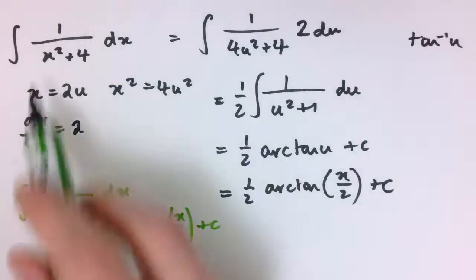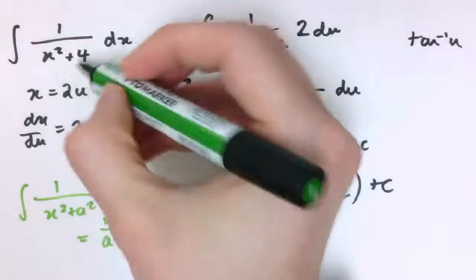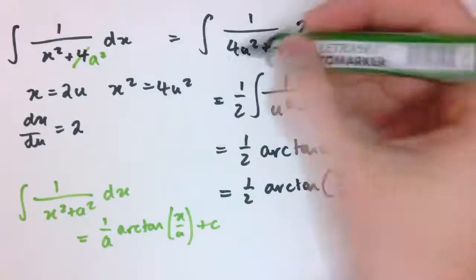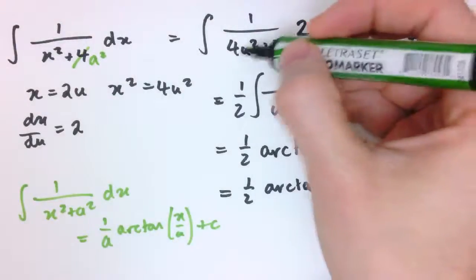Now I did 1 over x squared plus 4 here, but you could do 1 over x squared plus any other number, and I've just said 1 over x squared plus a squared dx here then, would be 1 over a arctan x over a plus c, you can follow through this argument with a squared here instead of 4.